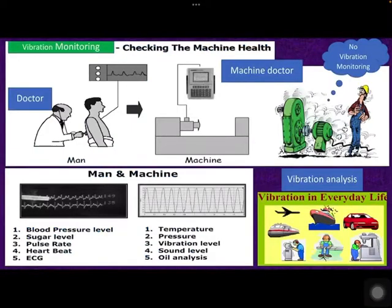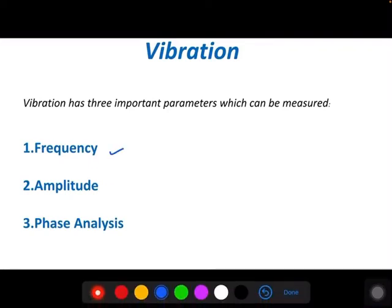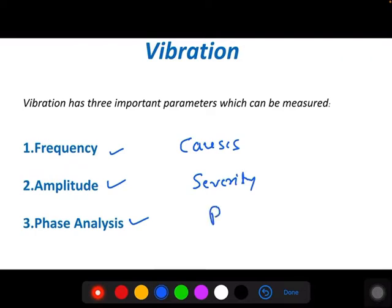Hi friends, welcome to Mega Technical Hub. In the last sessions we discussed two important parameters: frequency and amplitude. Frequency tells us about the probable causes of a machinery problem, and amplitude tells us about the severity. Today we are going to discuss the third important parameter, that is phase analysis, which is mainly used in vibration to pinpoint machinery defects.